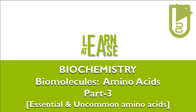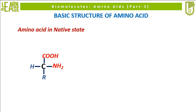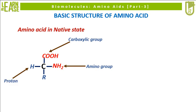I will start by showing you the basic structure of amino acid. The basic structure of an amino acid is shown in the image. The 4 vacancies on a single carbon atom — C1 of amino acid — are occupied by the amino group, carboxylic group, proton, and R group. This carbon atom is known as the alpha carbon.